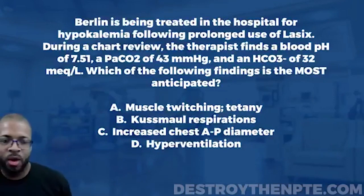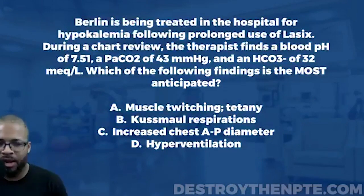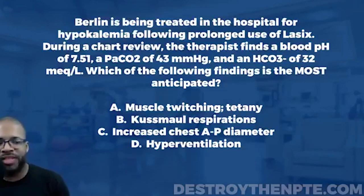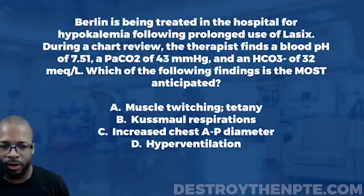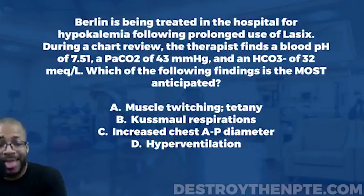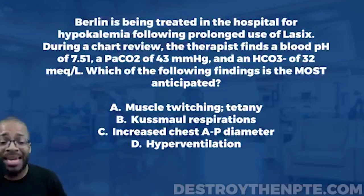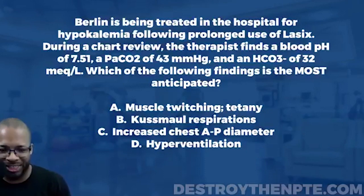For this week's Challenge Wednesday, we have our patient Berlin. Berlin is being treated in the hospital for hypokalemia following prolonged use of Lasix. During a chart review, the therapist finds a blood pH of 7.51, a partial pressure of carbon dioxide of 43 mmHg, and an HCO3 or bicarbonate of 32 mEq/L. Which of the following findings is most anticipated? A) muscle twitching or tetany, B) Kussmaul respirations, C) increased chest AP diameter, D) hyperventilation.